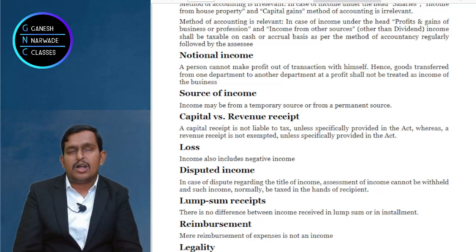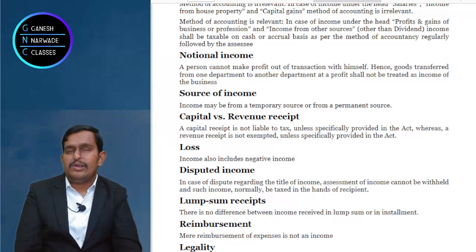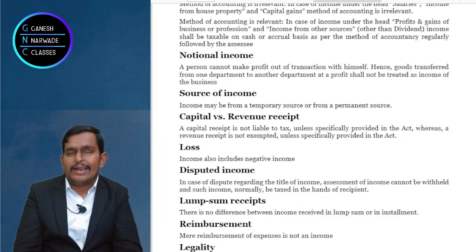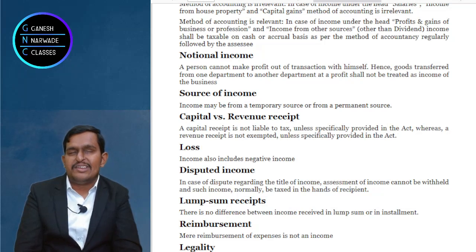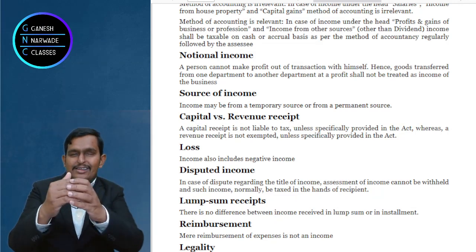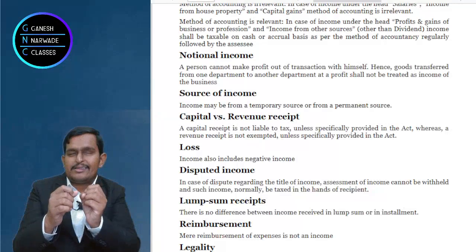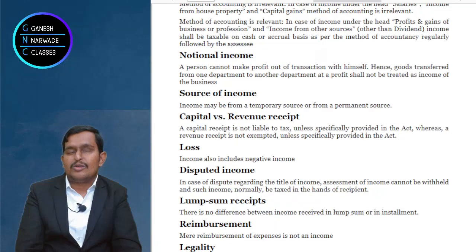Regarding loss — income doesn't just mean positive income. When you get income, the government collects tax. When you get a loss, the government will also support you. If it is negative income, that is loss, the government will give you certain benefits, which we will discuss in the chapter on Set Off and Carry Forward of Losses. If income is positive, we add to incomes; if it is a loss, we deduct it. Only the net income is taxable.